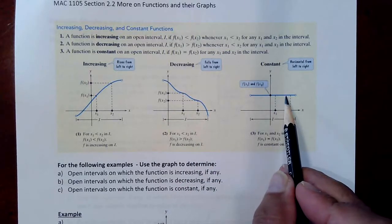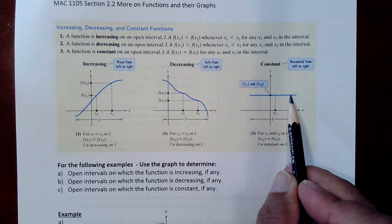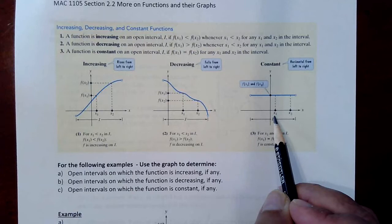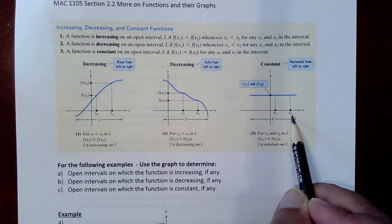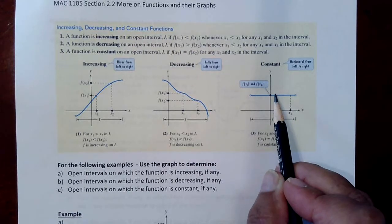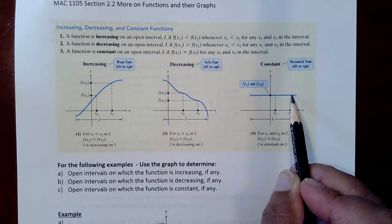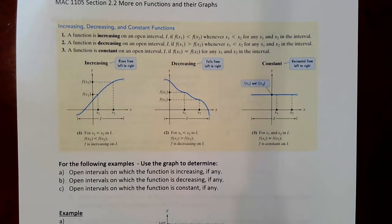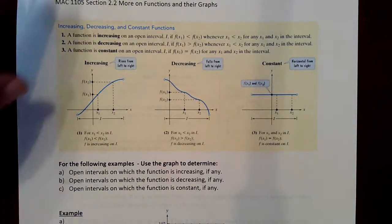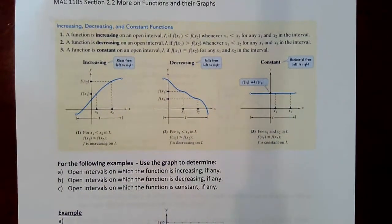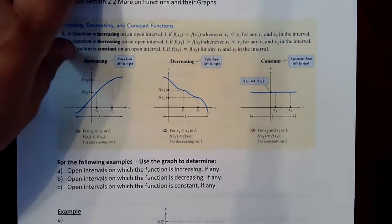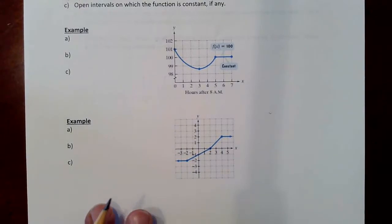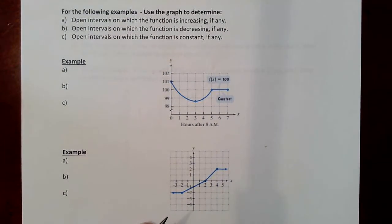When looking at a constant portion of a function, the y-values are consistent when comparing two different x-values — the first being smaller, the second being larger. The y-partner of the smaller x is the same as the y-partner of the larger x, which gives a flat line because the y-values are consistent. Let's take a crack at identifying increasing, decreasing, and constant intervals on some graphs.